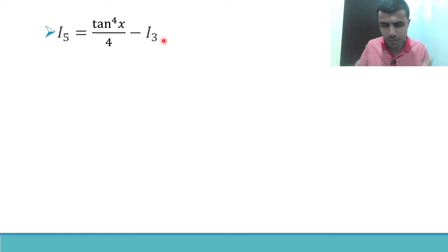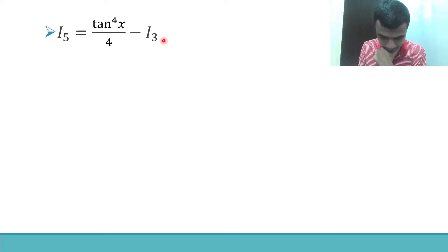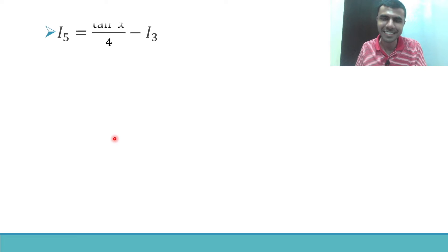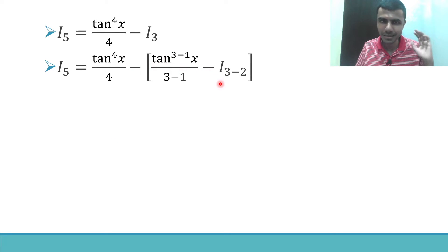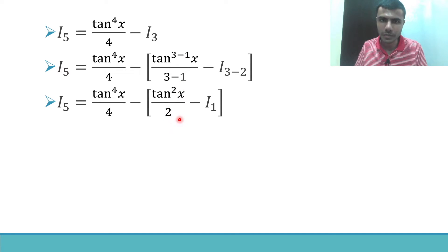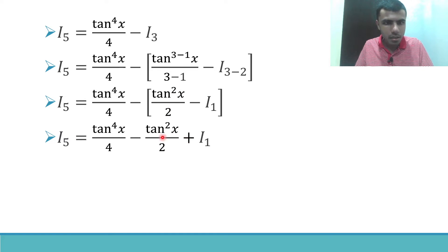Putting n = 3 in the formula: I_3 = tan^(3-1) x / (3-1) − I_(3-2) = tan² x / 2 − I_1. So substituting back: I_5 = tan⁴x/4 − tan²x/2 + I_1.